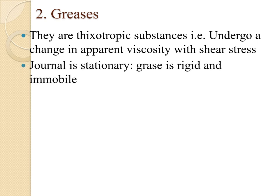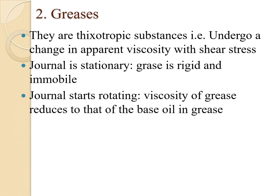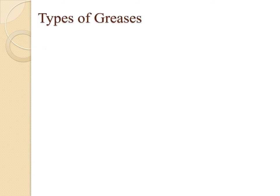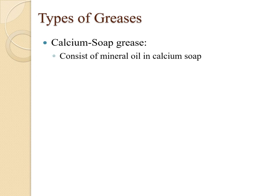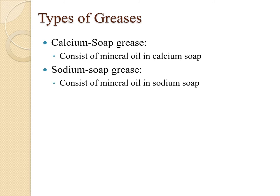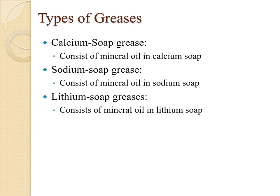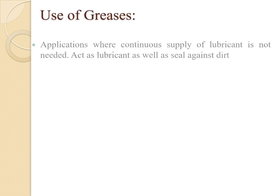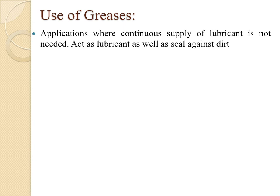When the journal is stationary, grease is rigid and immobile. When the journal starts rotating, the viscosity of the grease reduces to that of the base oil in the grease. Types of greases: calcium soap grease consists of mineral oil in a calcium soap; sodium soap grease consists of mineral oil in a sodium soap; and lithium soap grease consists of mineral oil in a lithium soap.